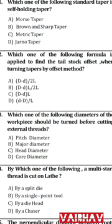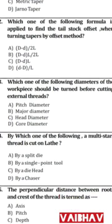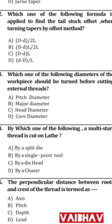Question 2: Which one of the following formulas is applied to find the tailstock offset when turning tapers by the offset method? The formula is: tailstock offset = (D minus d) divided by 2L, where D is large diameter, d is small diameter, and L is the length.